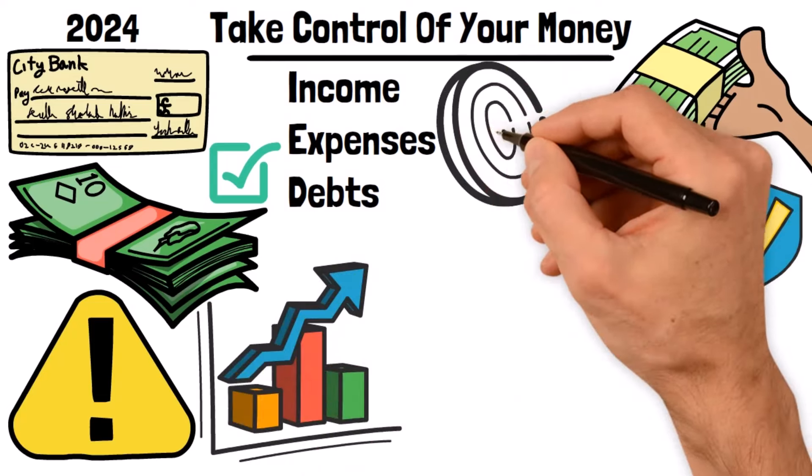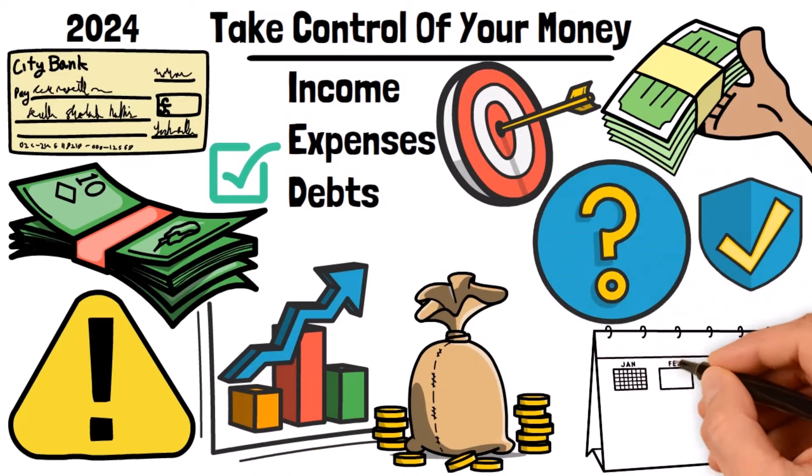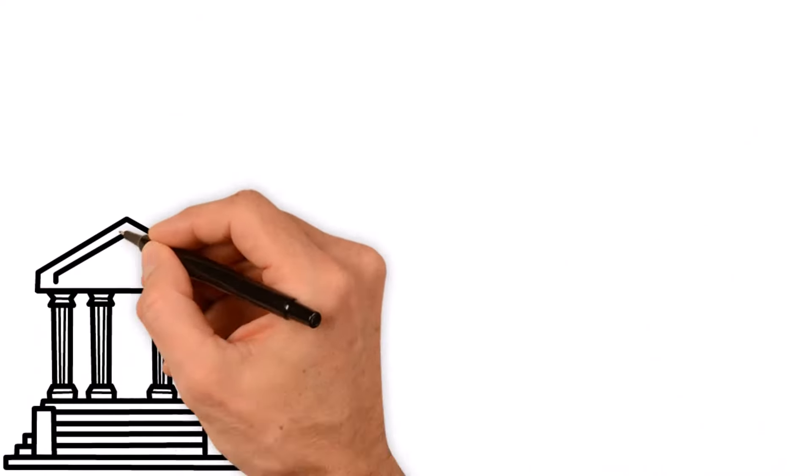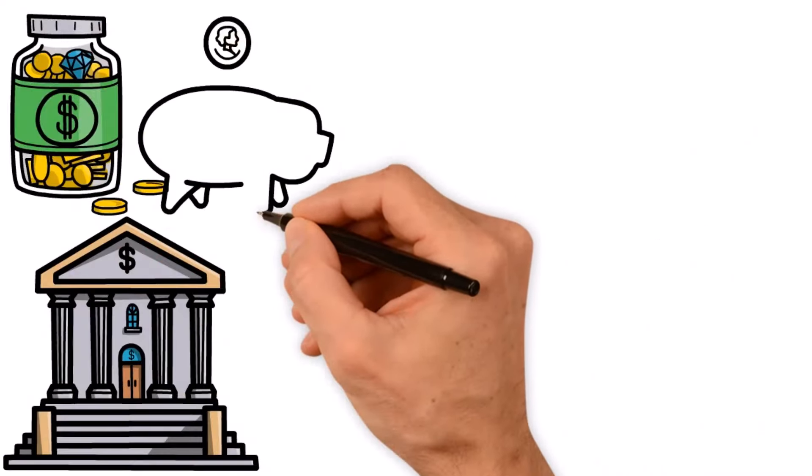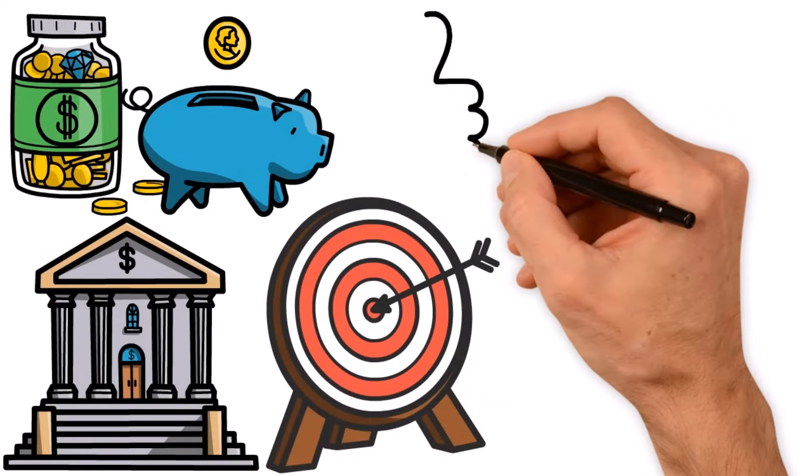Setting clear financial goals is the next step towards controlling your money. Ask yourself what you want to achieve financially in the short and long term. Do you want to pay off debt, save for a down payment, or start investing? Having specific goals gives you something to work towards and helps you stay motivated.